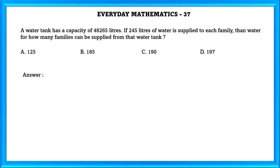Question Number 37: A water tank has a capacity of 48,265 liters. If 245 liters of water is supplied to each family, then water for how many families can be supplied from that water tank? Capacity of water tank equals 48,265 liters. Quantity of water supplied to one family equals 245 liters.